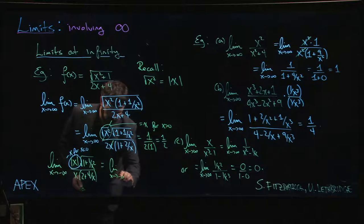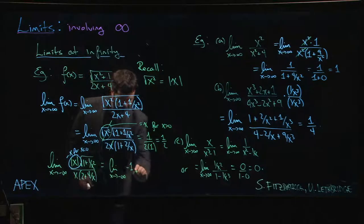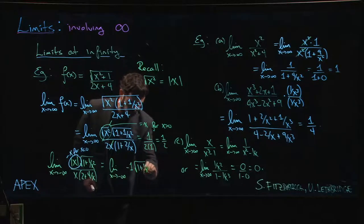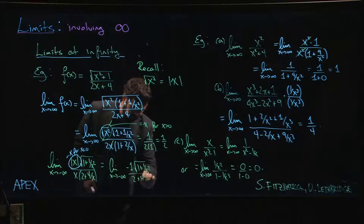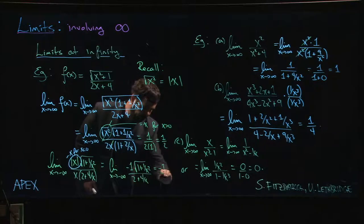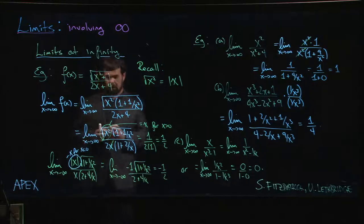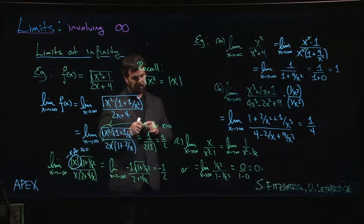All right, minus x over x gives me minus one. So I get the limit as x goes to minus infinity of minus one times the square root of one plus one over x squared divided by two plus four over x. So I actually get minus one half for my limit in this case.